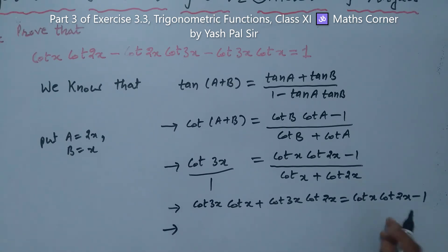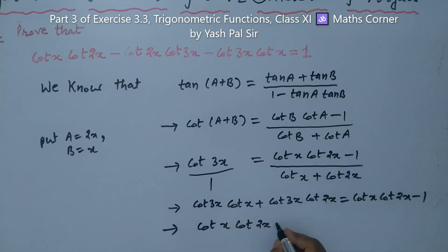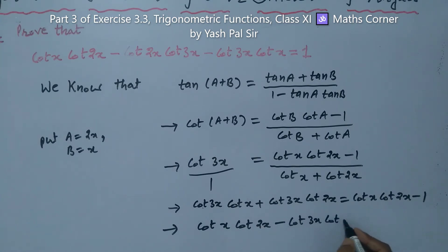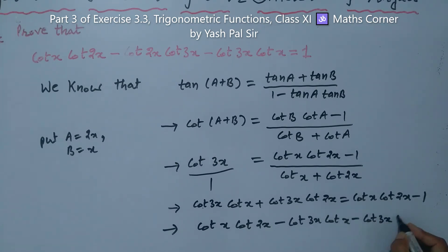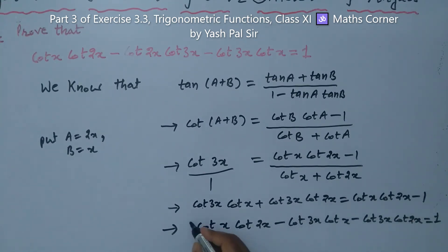Rearranging by moving terms to the right side: cot x · cot 2x minus cot 3x · cot x minus cot 3x · cot 2x equals 1 (since minus 1 moves to the left as plus 1). This is exactly what was to be proved. Hence proved.